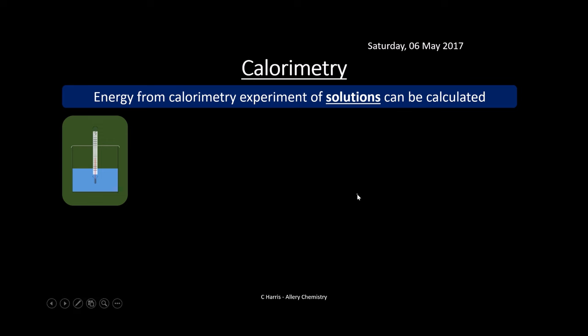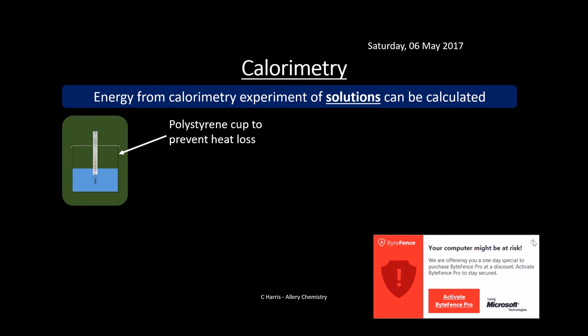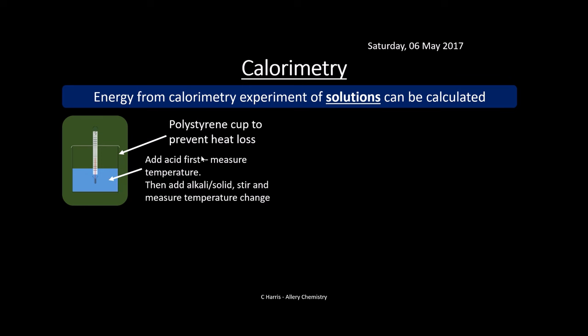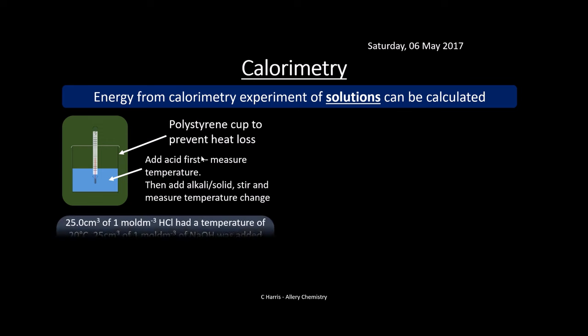Instead of using a fuel, we can do a calorimetry experiment with a solution. We use a polystyrene cup with a lid and a thermometer. The polystyrene cup is there to prevent heat loss — we want to contain that heat within the cup. We add our acid first and measure the temperature. Then we add an alkali or solid, stir, and measure the temperature change. Normally we use acid-alkali reactions because they show a reasonable temperature change.